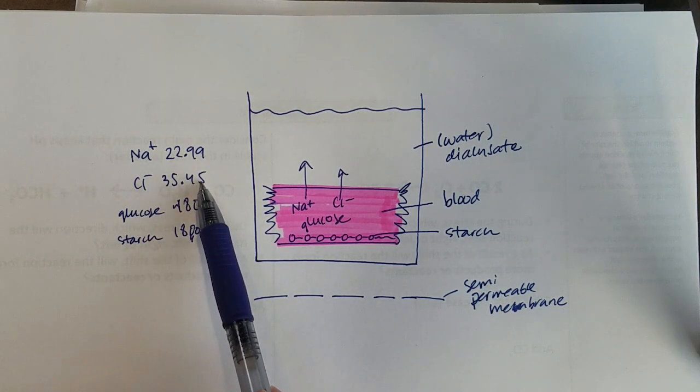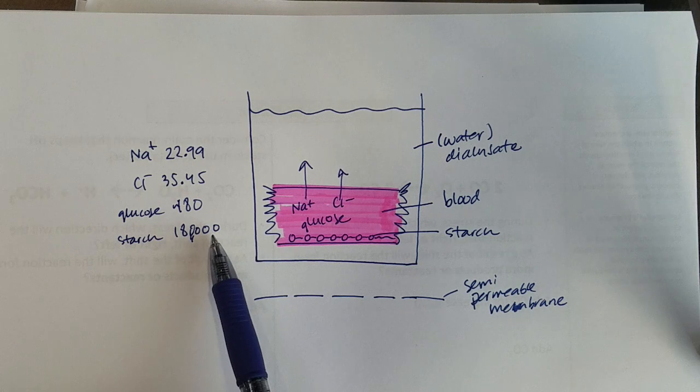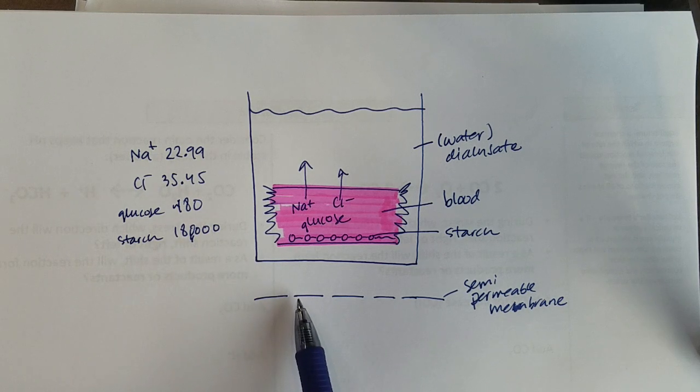We can see that these are very small, larger, and then starch is enormous. We want to think about which of those would be able to move through these small holes faster. You can probably have a good educated guess on that.